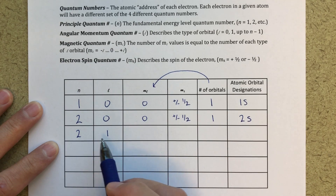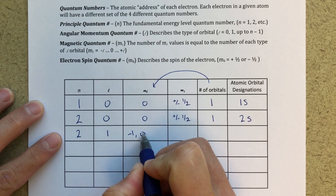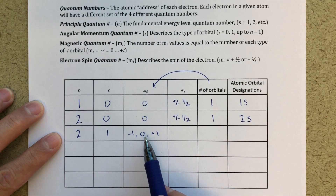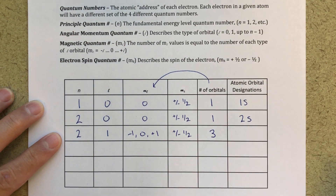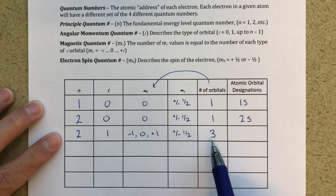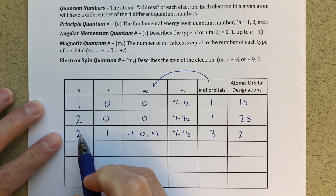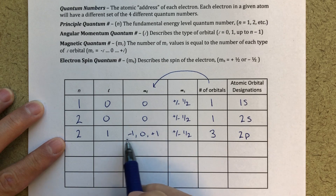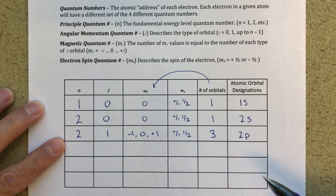For L equals one in the n equals 2 energy level, M sub L values can be minus 1, 0, or positive 1 — from negative L up through zero up to positive L. M sub S is plus or minus one half, as always. Now I've got three different values of M sub L, which means I have three different orbitals. The orbital designation is 2p, because n equals 2 and L equals 1 corresponds to a p orbital.